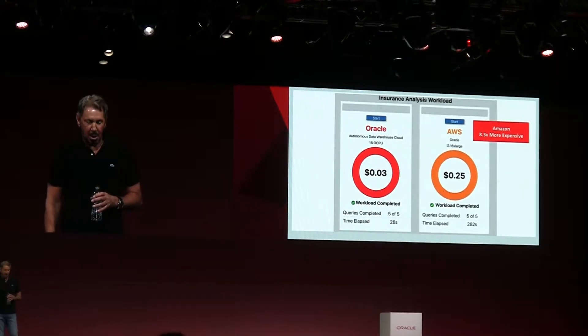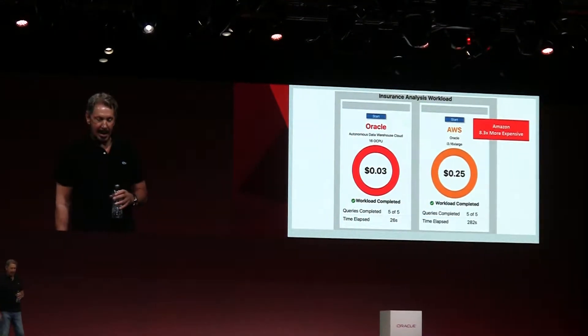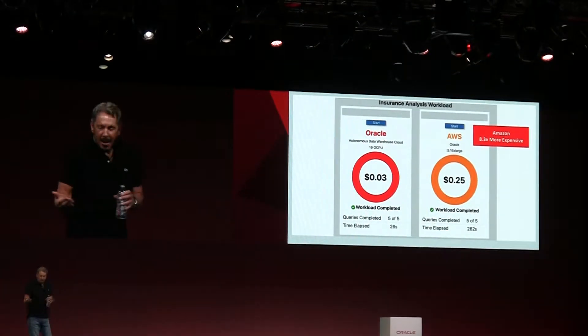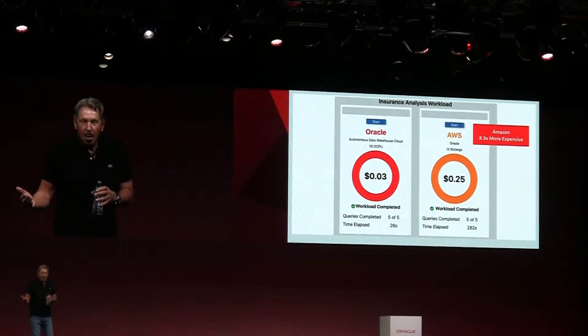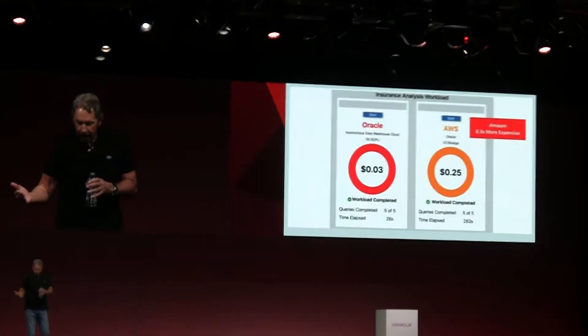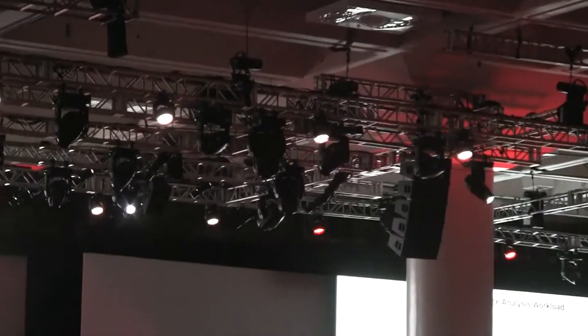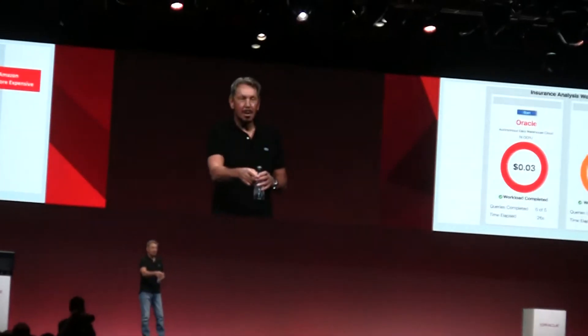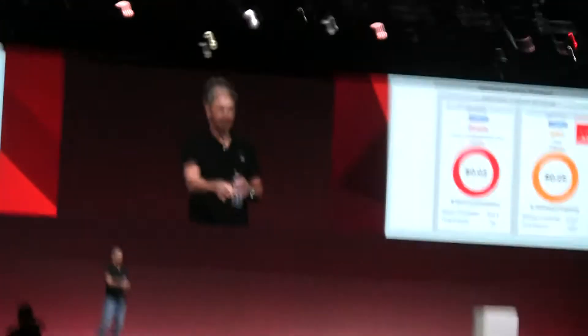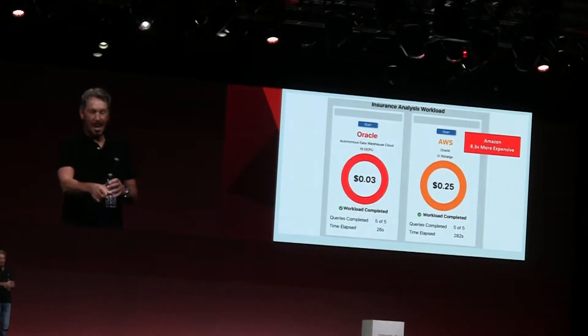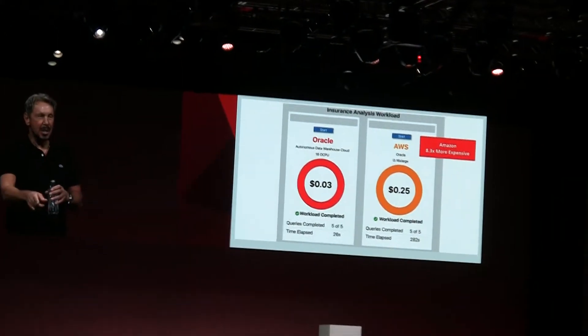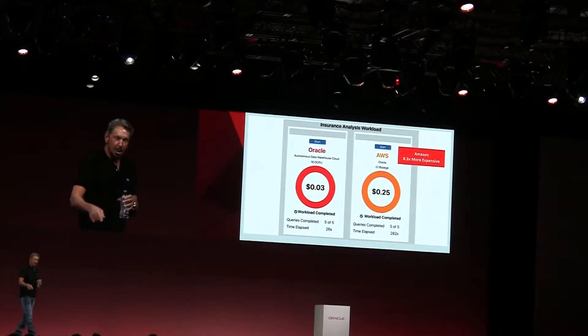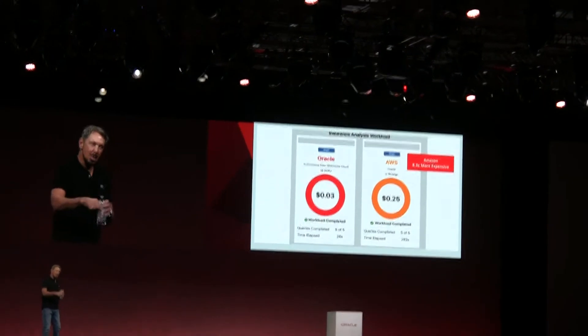It took Amazon 282 seconds — so we're more than 10 times faster. Our bill is 3 cents, their bill is 25 cents. You want to run 10 times faster? You've got to be willing to pay less.